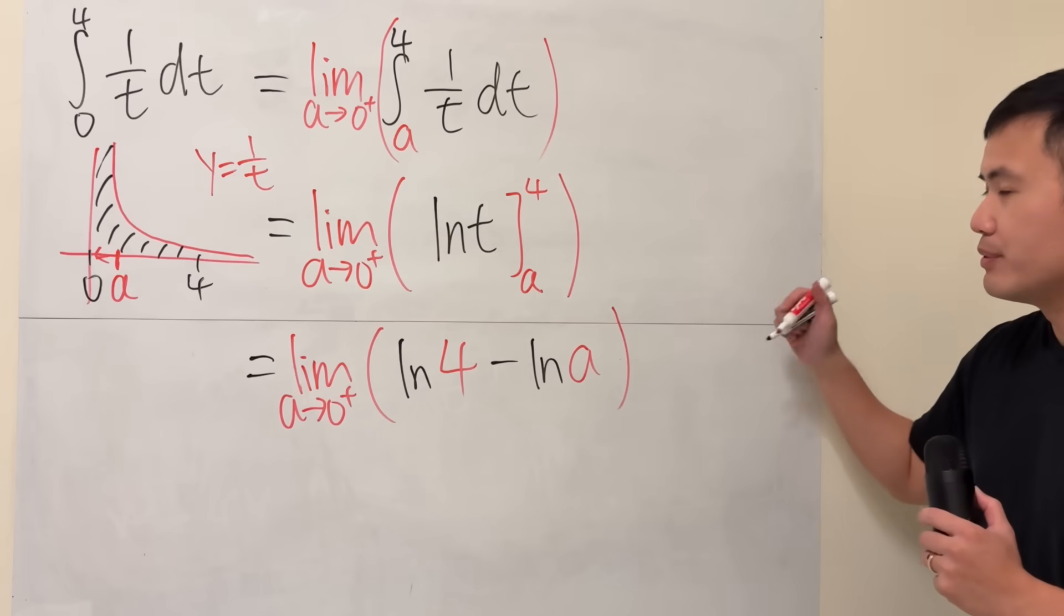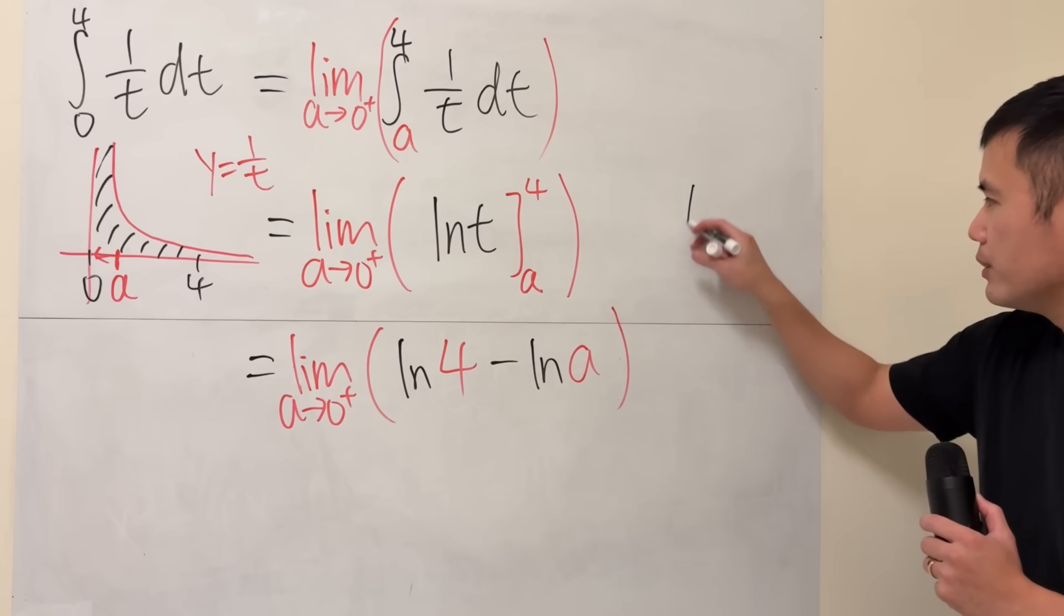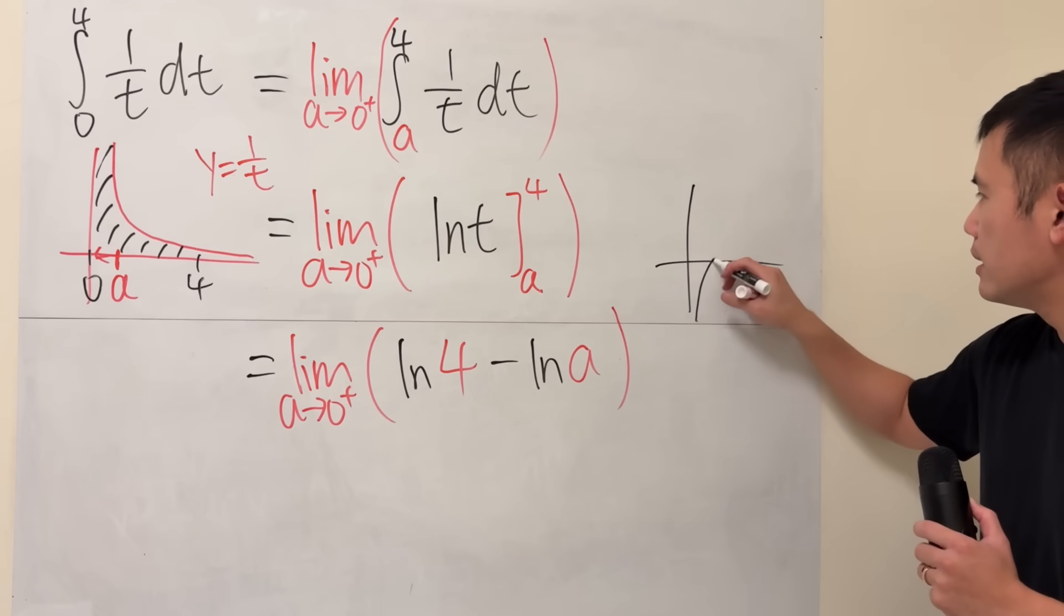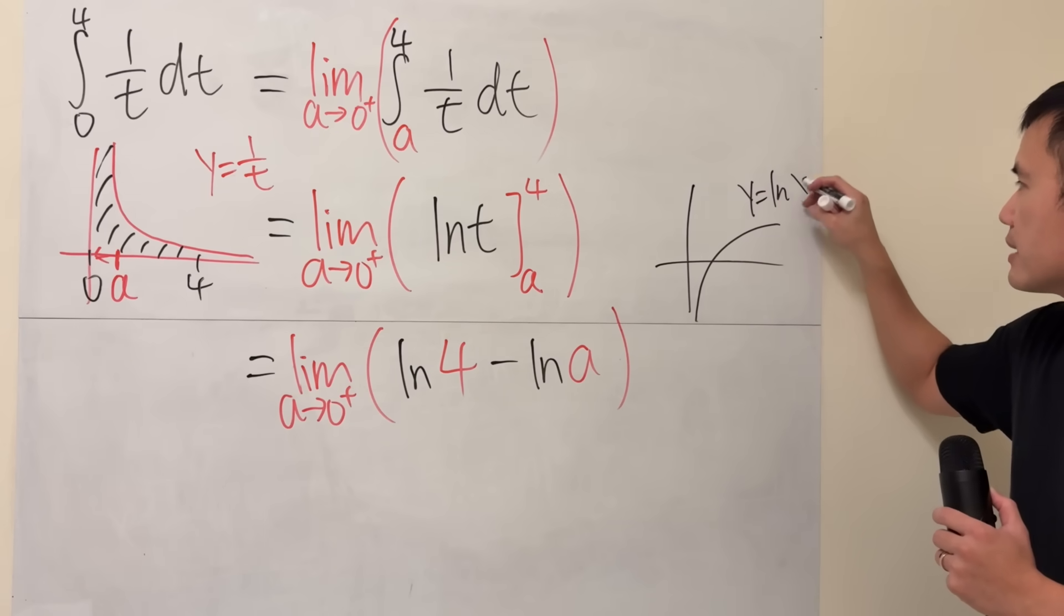So to make sense of this, we will have to look at the graph again. If you look at ln, this is y equals, let's say, ln x.